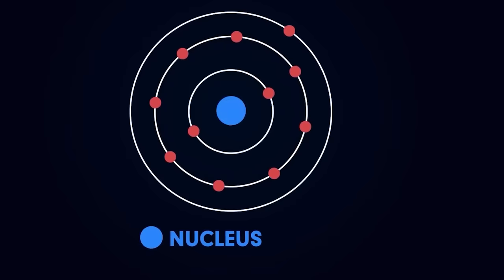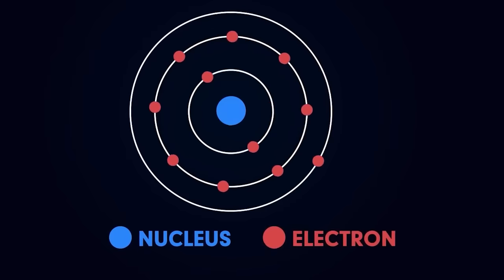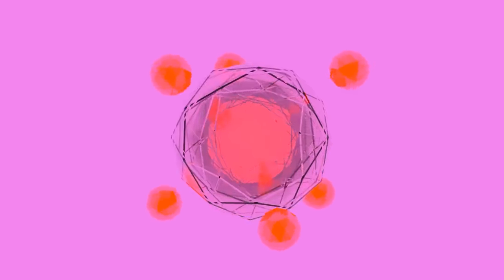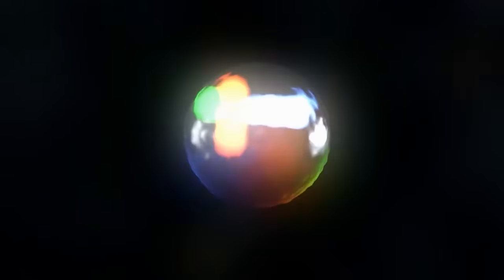Bohr took inspiration from Planck's work and applied it specifically to electrons whirling around a nucleus. He asserted that the smallest orbit an electron could have would possess an angular momentum exactly equal to one Planck constant. Larger orbits, on the other hand, could exhibit multiples of the Planck constant, like twice or three times its value, but they could never have fractions like 1.3 or 2.6.